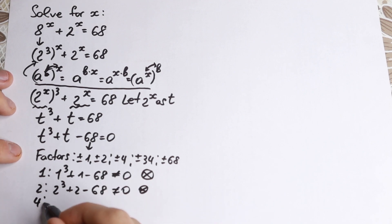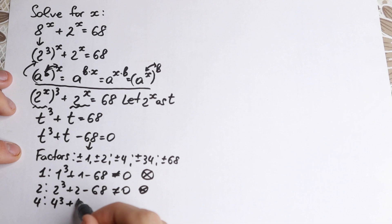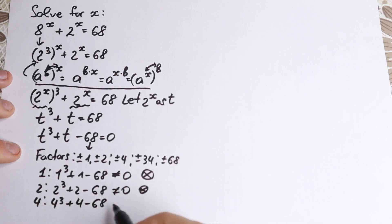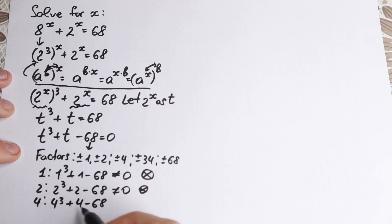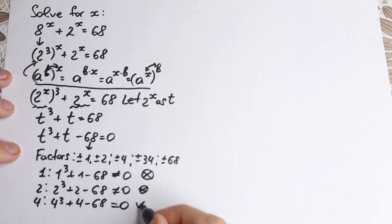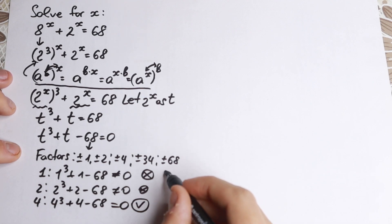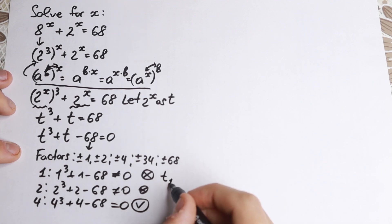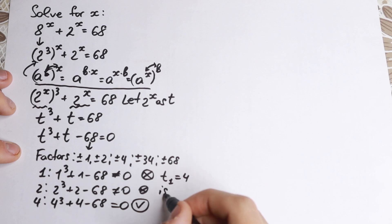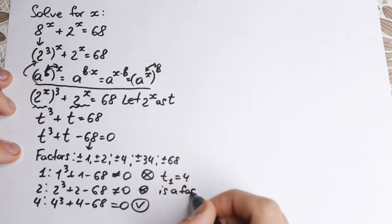Let's go with 4. So we have 4 cubed plus 4 minus 68. What about this factor? 4 cubed: 4 times 4 is 16, times 4 is 64, plus 4 is 68. This is really great — we find our factor! So t equals 4 is a factor.